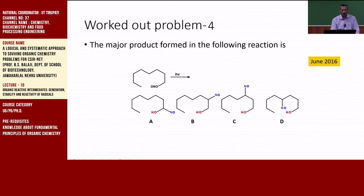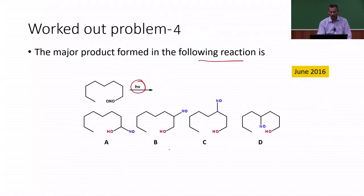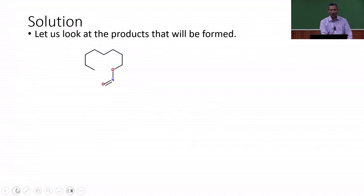In the next problem, we are going to find out the major product formed in the following reaction. This question was asked in June 2016. We have a nitrite compound exposed to hν — that is, photochemical conditions. Four different products are given, all nitroso or hydroxy-nitroso derivatives. We are going to find out what product is formed when this nitrite ester is exposed to photochemical conditions.